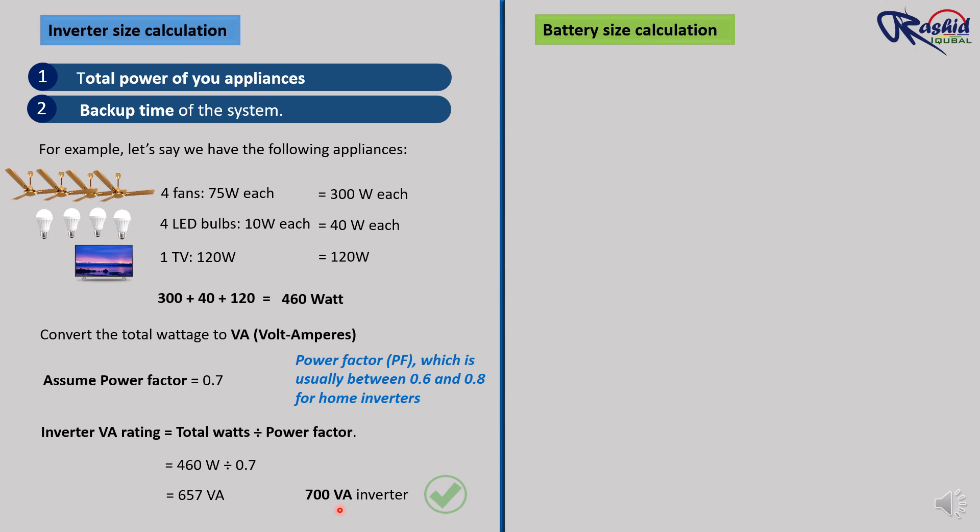Now let's calculate the battery size. To do that we need to know how long we want the backup to last. Let's assume we need the inverter to run for 4 hours during a power cut. Here is the formula to calculate the battery capacity.